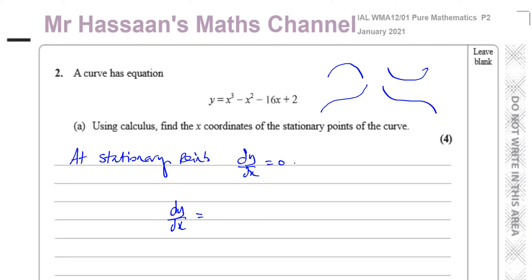We're going to have 3 times x squared — multiply by the power, take one from the power — minus 2 times x, the power of 1 (you don't have to write the 1), minus 16. The constant term 2 is completely dropped. So the gradient of minus 16x is minus 16 and the gradient of 2 is zero. So dy/dx equals 3x squared minus 2x minus 16.